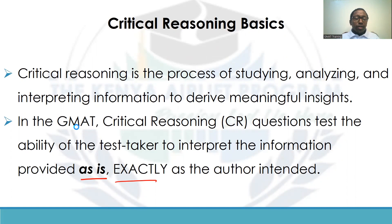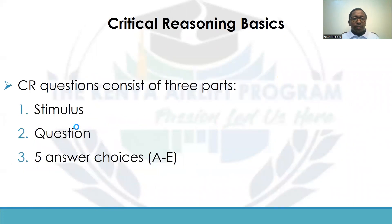Critical reasoning is one of the sections of a verbal reasoning exam and it consists of three parts. We have the stimulus, then after the stimulus comes the question, and then as usual in GMAT you have your five answer choices.